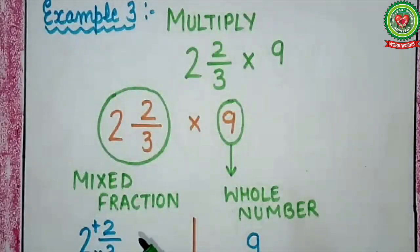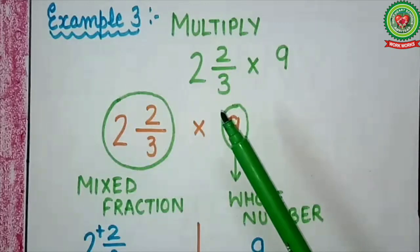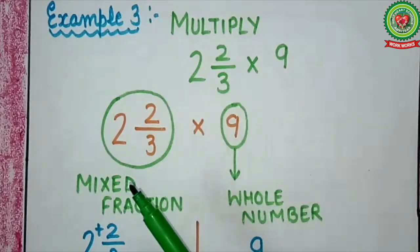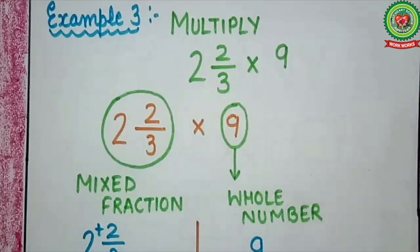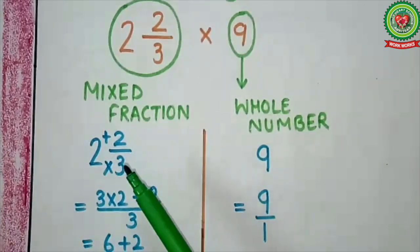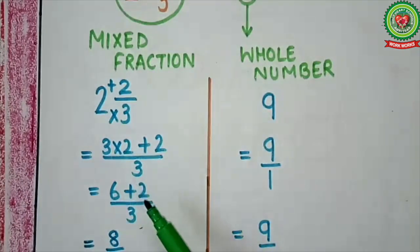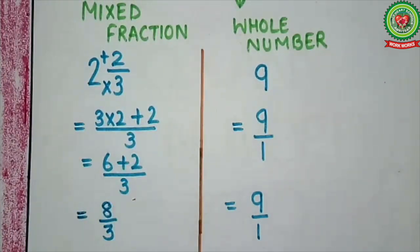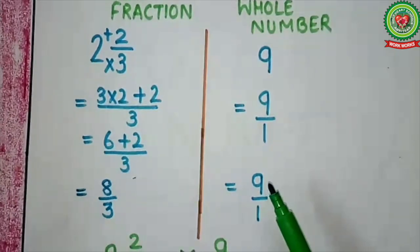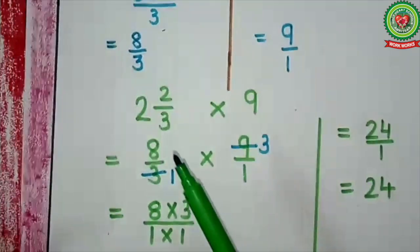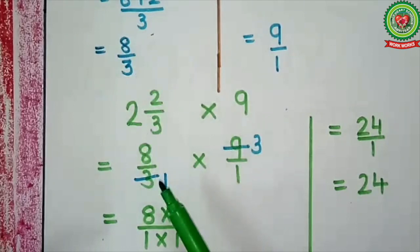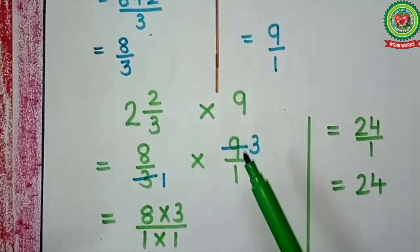Let's see one more example. Here we have to multiply 2 whole number 2 upon 3 by 9. 2 whole number 2 upon 3 is a mixed fraction and 9 is a whole number. Before multiplying, we have to change the mixed fraction into an improper fraction and the whole number into a fraction. So: 3 multiplied by 2 plus 2 upon 3 gives us 6 plus 2 upon 3, which is 8 upon 3. On the other hand, 9 will change into a fraction as 9 upon 1. So I will write 8 upon 3 multiplied by 9 upon 1.